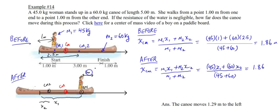Yet we know from this end of the canoe to this center of mass all the way over here, that's still 2.5 meters. Because relative to the canoe, the center of mass of the canoe is still in the same spot. So the difference between